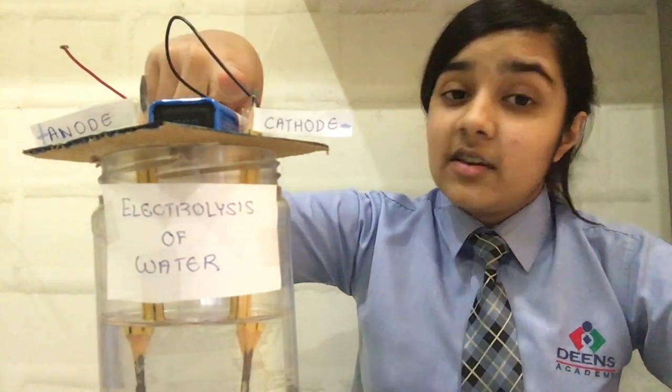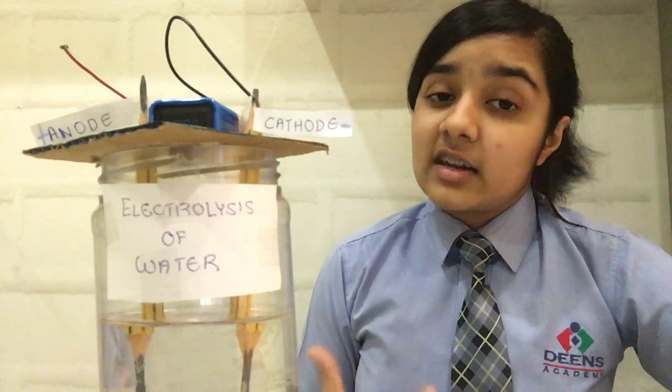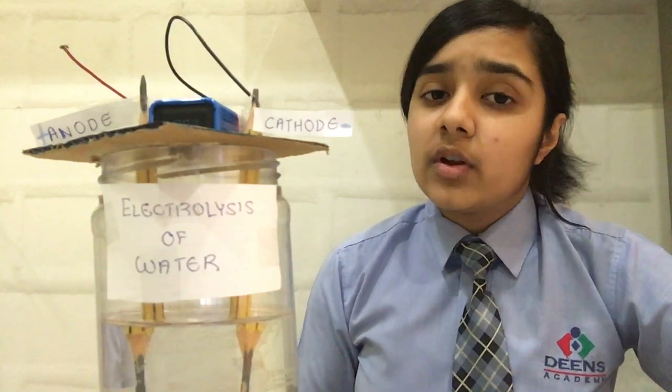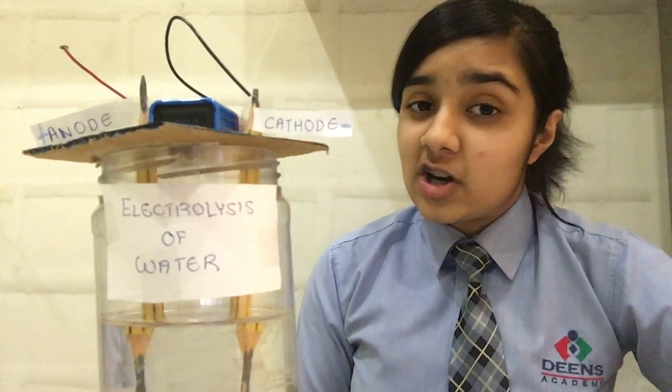The electrode connected to the negative terminal of the battery is negatively charged and is known as the cathode, as it attracts cations, which are positively charged in nature.